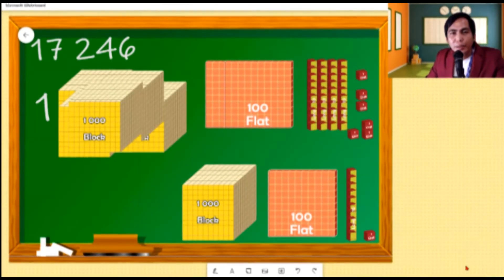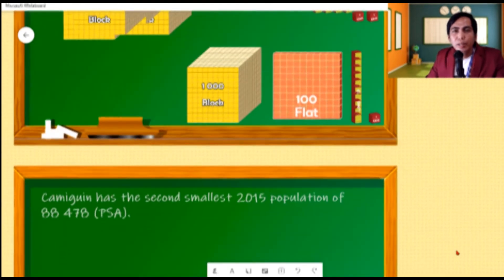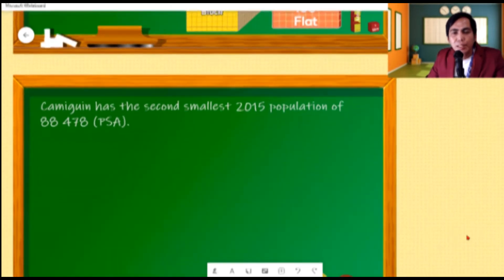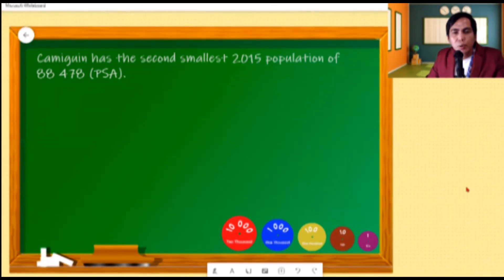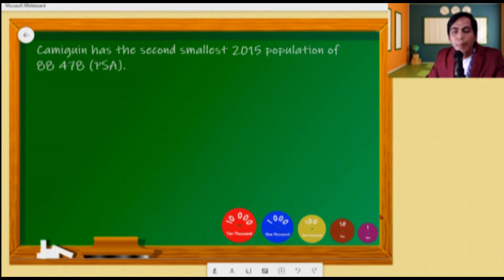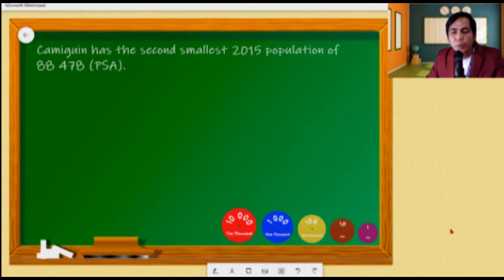We will be using another model. This time, we will use this model to represent the second smallest province in terms of population during the 2015 census — Camiguin. In this model, we will be using the number buttons, or number disks. Just like in the previous model, we have the units or ones, the tens, the hundreds, the thousands, and the ten thousands, corresponding to their place values.